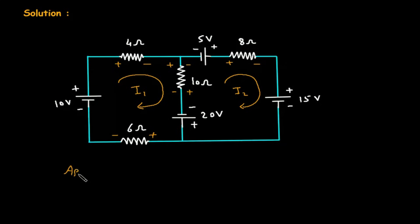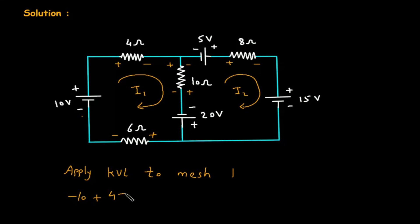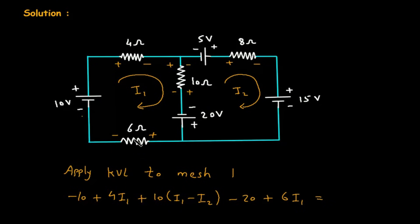Now we will apply KVL, that is Kirchhoff's Voltage Law, to mesh number 1. Starting from here: minus 10, then plus 4I1, then plus 10(I1 minus I2), then minus 20, then plus 6I1. All of this is equal to 0.